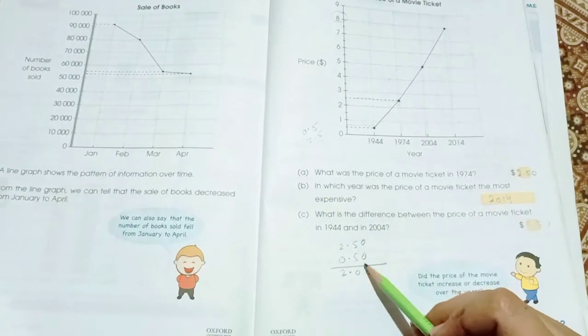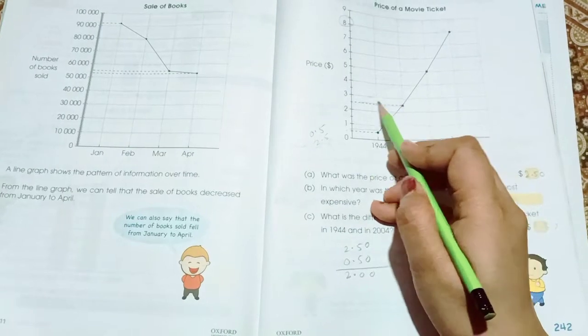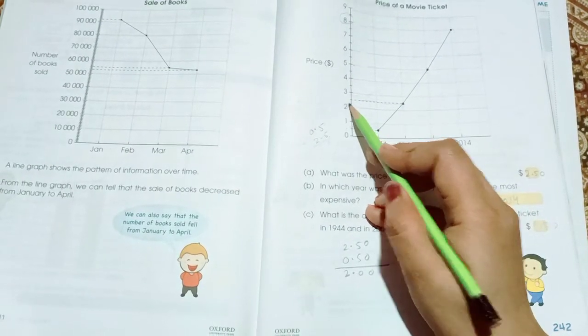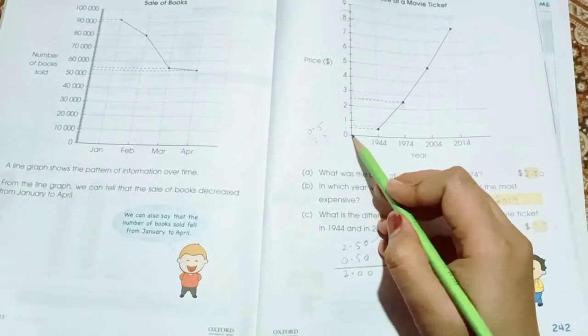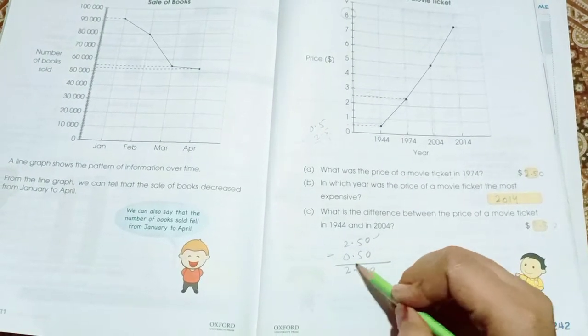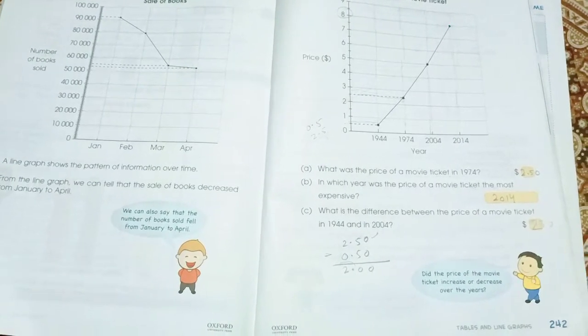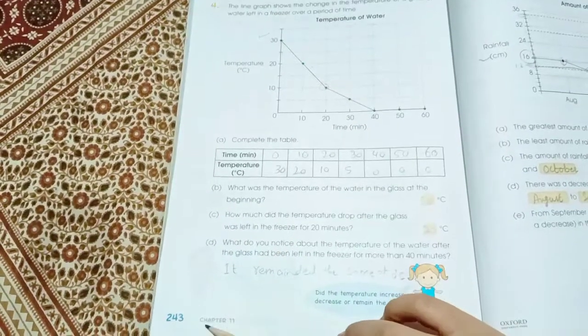So number C is, what is the difference between the price of a movie ticket in 1944 and in 2014? So the difference between 1944 and 2004 is, in 2004 the ticket price is 2.50 and in 1944 the price is 0.5. When we subtract both we get the answer 2 dollars. So the difference between the price is 2 dollars.